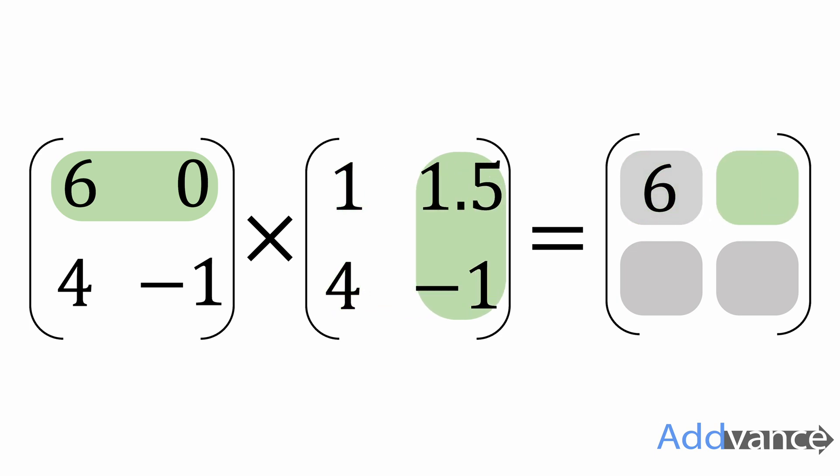To find the next number, I'm going to multiply the top row by the second column. 6 times 1.5 plus 0 times minus 1. 6 times 1.5 is 9 plus 0 is 9.